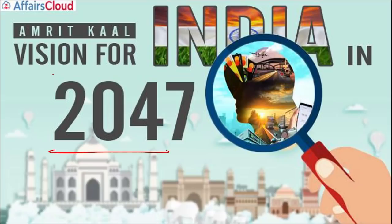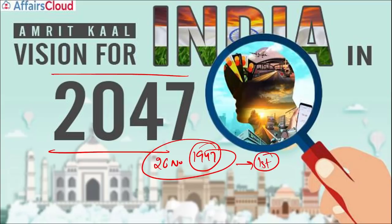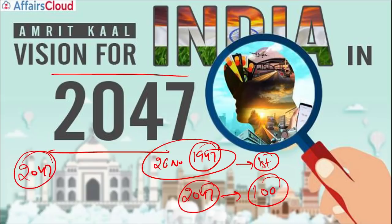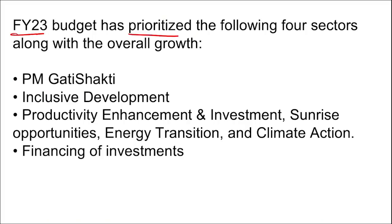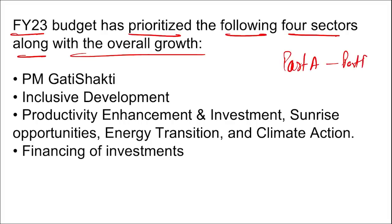Why is 2047 important? It is called Amrit Kaal vision for India. Since India presented its first budget on 26th November 1947, in 2047 it will be India's 100th budget. Hence 2047 is declared as Amrit Kaal, or 'India@100.' The fiscal year 2022-23 budget has prioritized four sectors along with overall growth. The budget also has two parts — Part A and Part B.